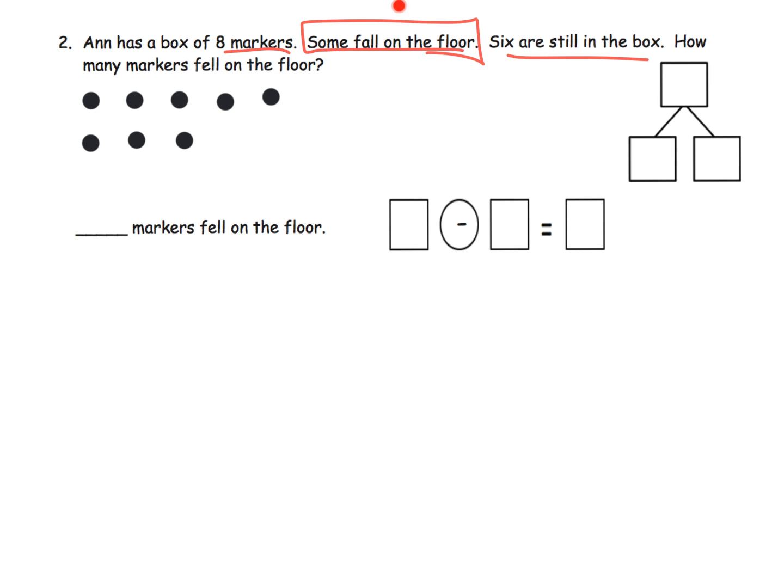And then we're told some fall on the floor and we don't know how many fall on the floor, but we know that 6 are still in the box. So we are going to circle 6 that are still in the box, and so that's going to look like this. And then it says how many markers fell on the floor, so these remaining 2 are the ones that fell off the floor and we're asked to cross those off.